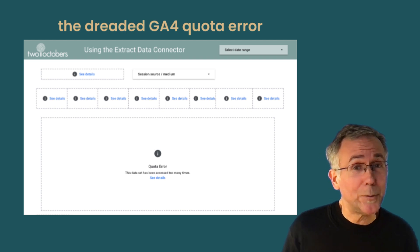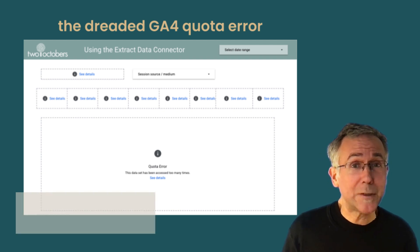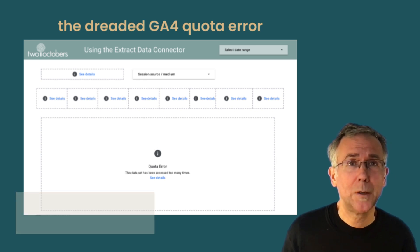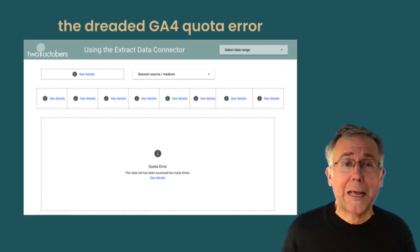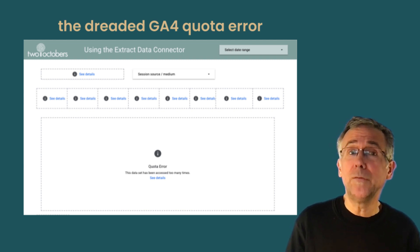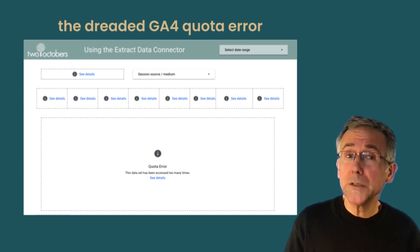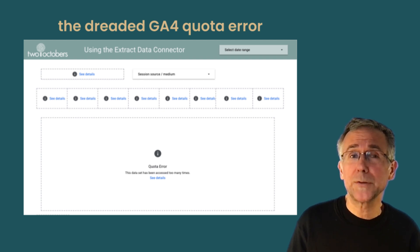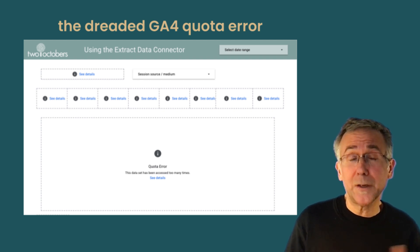If this looks familiar to you, then you've experienced the dreaded quota limit issue in Looker Studio with GA4 data. We're going to talk about how to get around that with the Extract Data Connector. A couple key benefits of the Extract Data Connector are that it only pulls data once per day, which avoids those quota limits and tends to make your dashboards much faster.